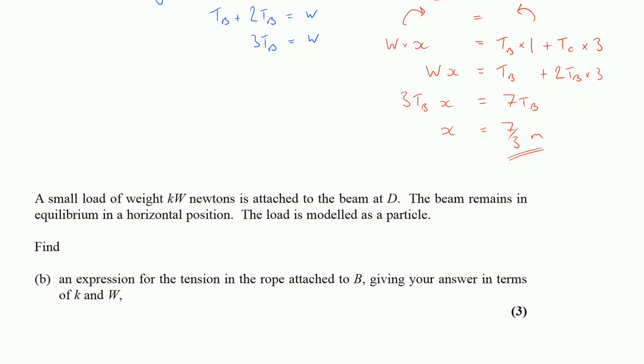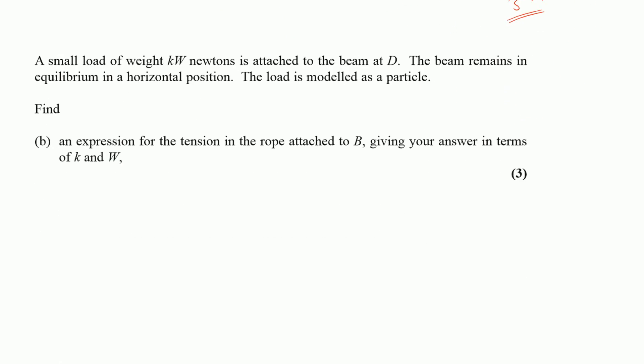Now in the second part of this question, I'm told about a small load that's being attached to the beam at D. The beam remains in equilibrium in a horizontal position. The load is modelled as a particle. Now I think it's important to point out here that even though it's not stated in the question, the tension at C is no longer twice the tension at B. That's because we've changed the system. We've added more mass to the system, so that is no longer the case. Now it's not explicitly stated here, but it is definitely the case.